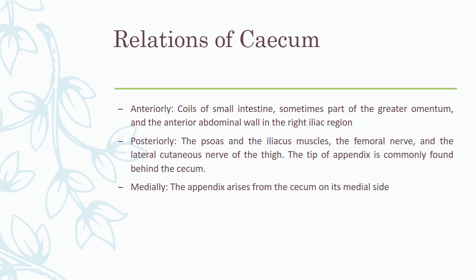The relations of the cecum are important. Anteriorly, there are coils of small intestine in front of it, sometimes a part of the greater omentum, and the anterior abdominal wall in the right iliac region. Posteriorly, we have certain muscles such as the psoas and iliacus, the femoral nerve and the lateral cutaneous nerve of the thigh, and the tip of the appendix, which is commonly found behind the cecum. Posterior medially, the appendix arises from the cecum.